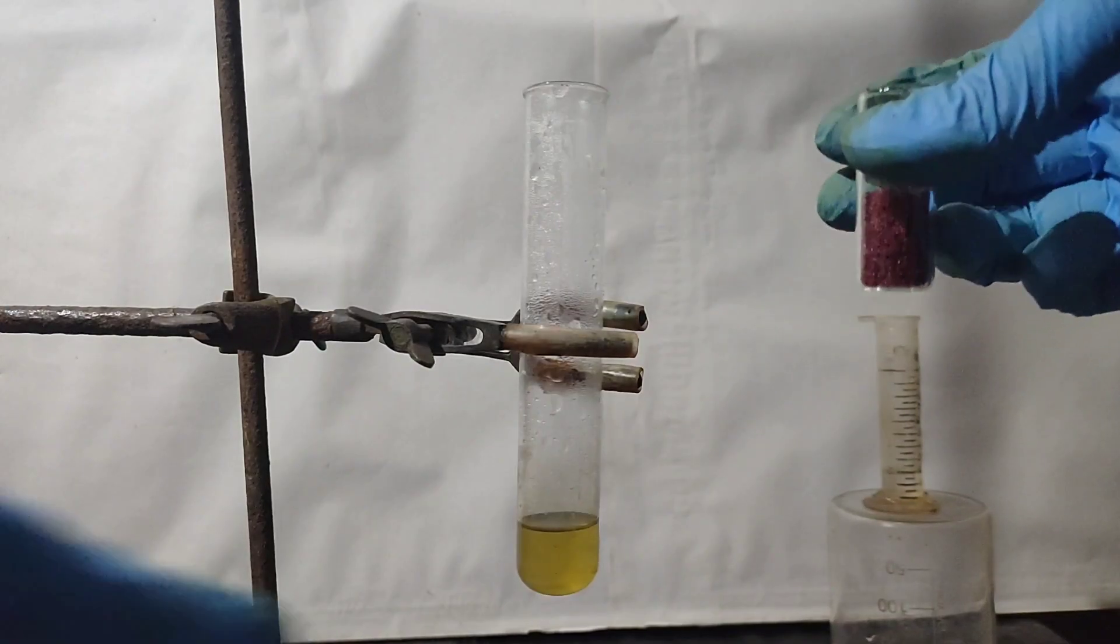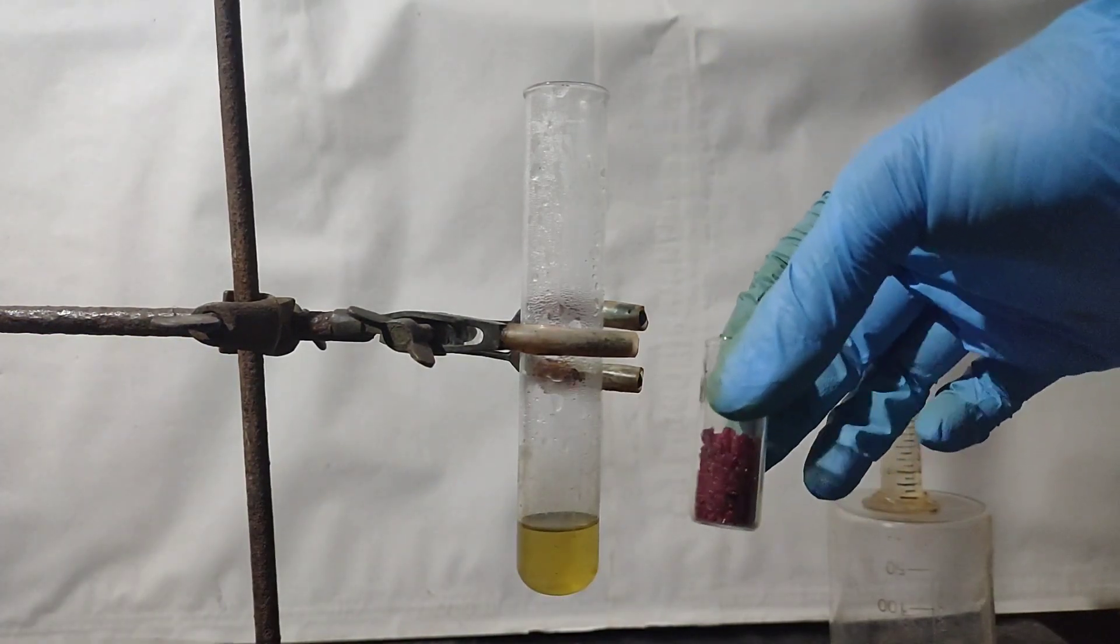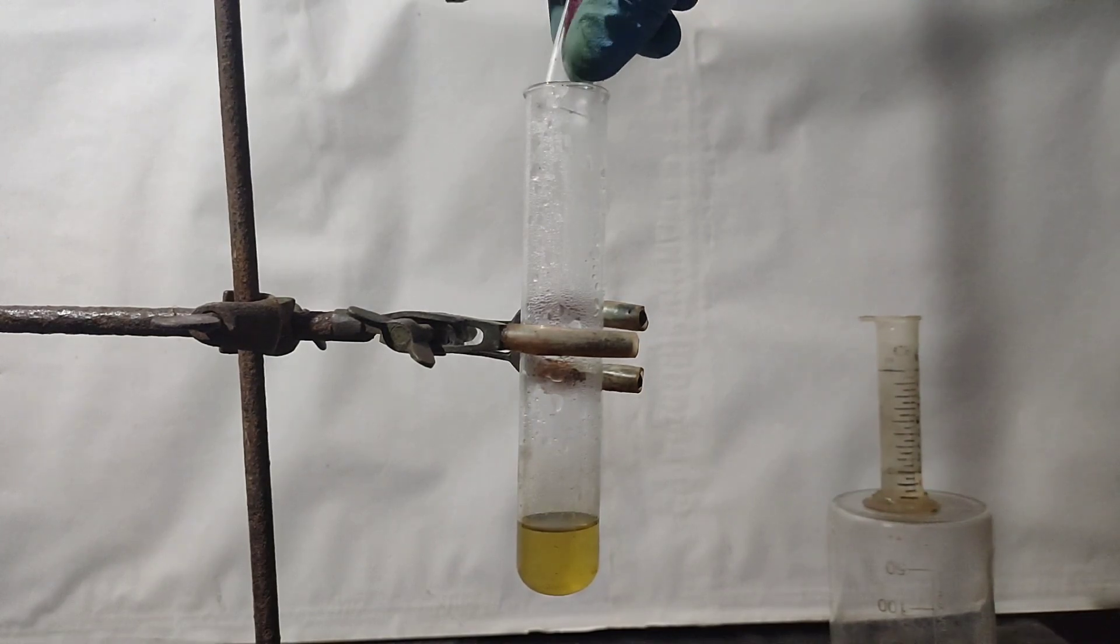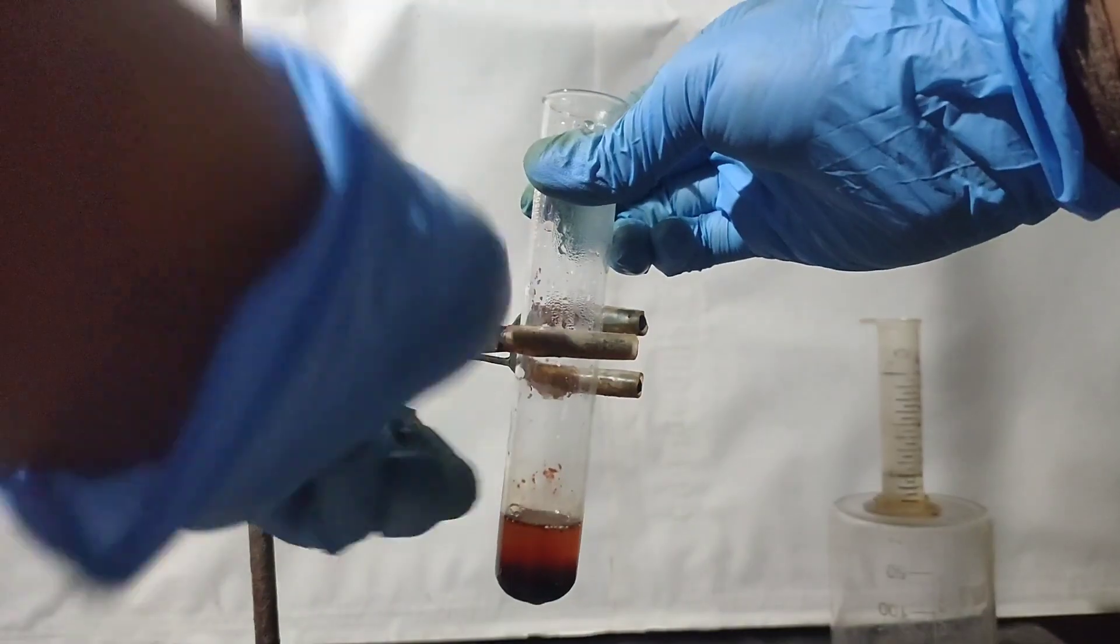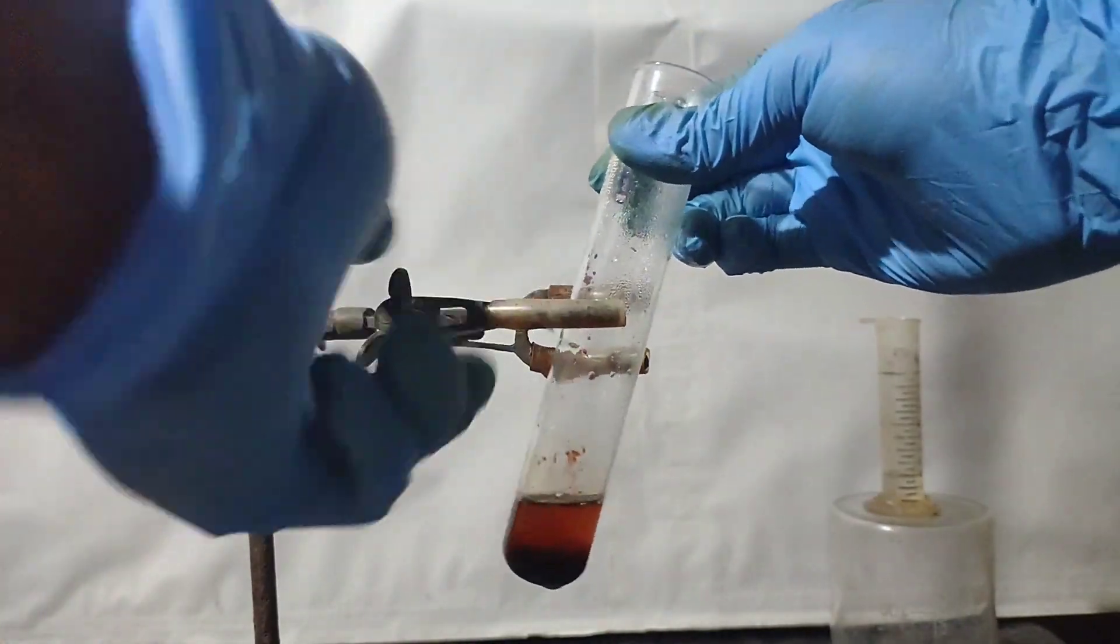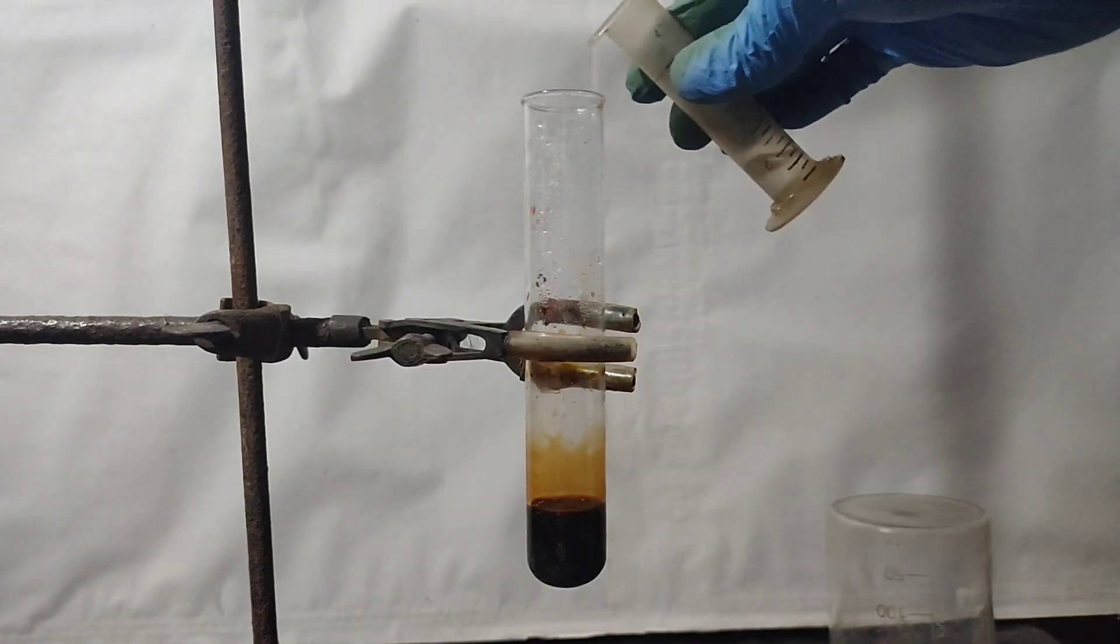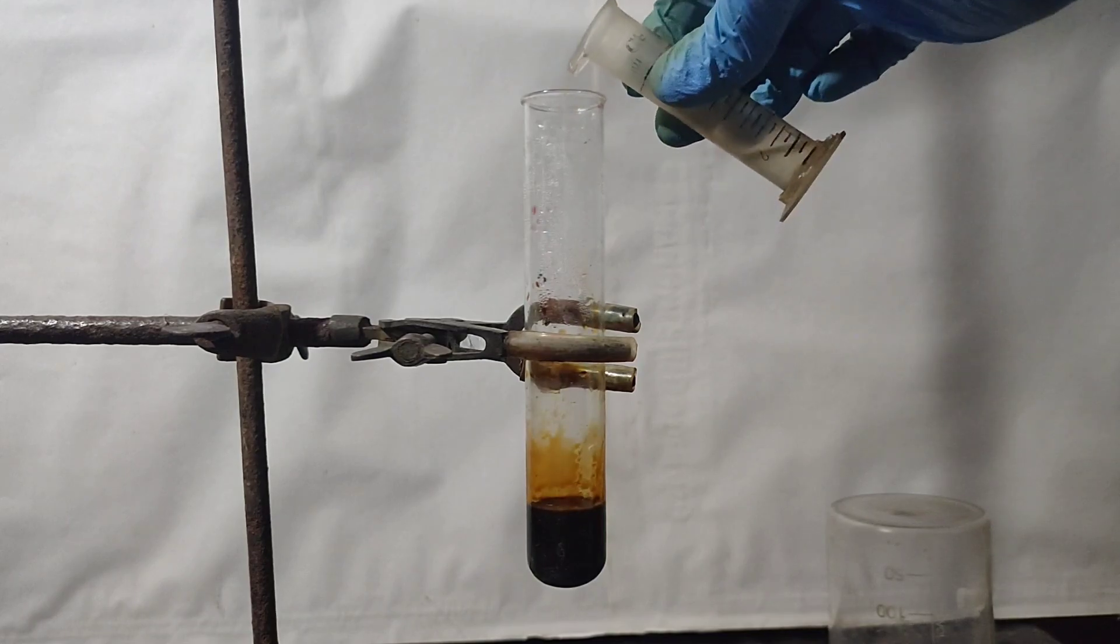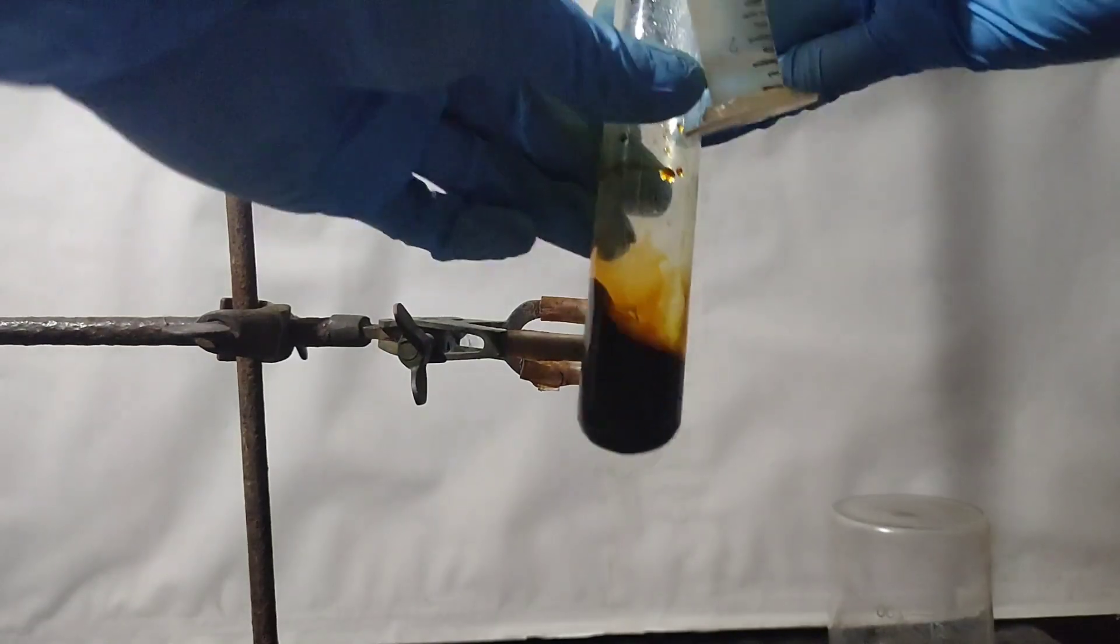When the test tube was just slightly warm, I added the cobalt chloride into it. I took out the test tube from the stand and shook it to dissolve everything. When everything dissolved, I added the glacial acetic acid water mixture slowly into the test tube with shaking.